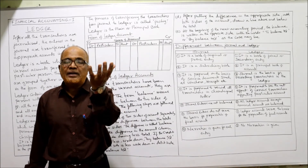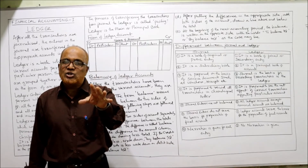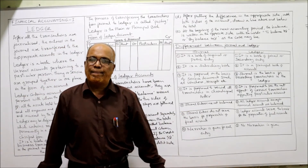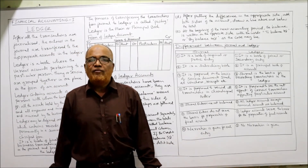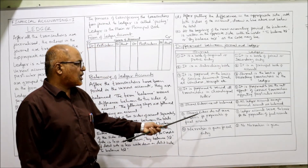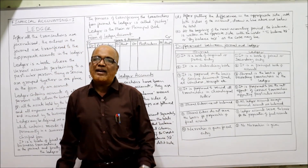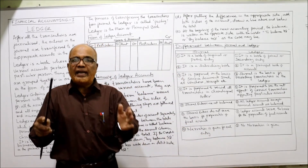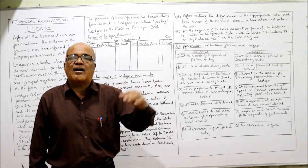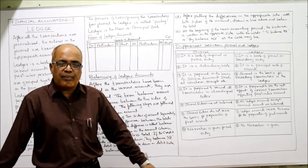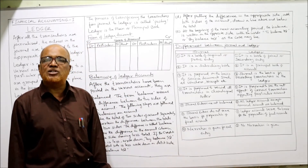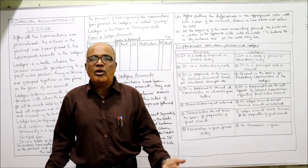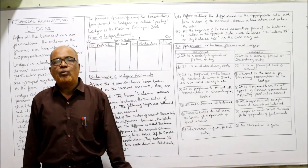In the ledger we can see whether a particular account shows a debit balance or a credit balance. Journal entries are not balanced, whereas balancing is required in ledger accounts. Also, journal entries do not serve as the basis for preparation of final accounts — final accounts take account balances from ledger. Lastly, narration is given for each transaction entry in journal, but in ledger accounts no narration is required.